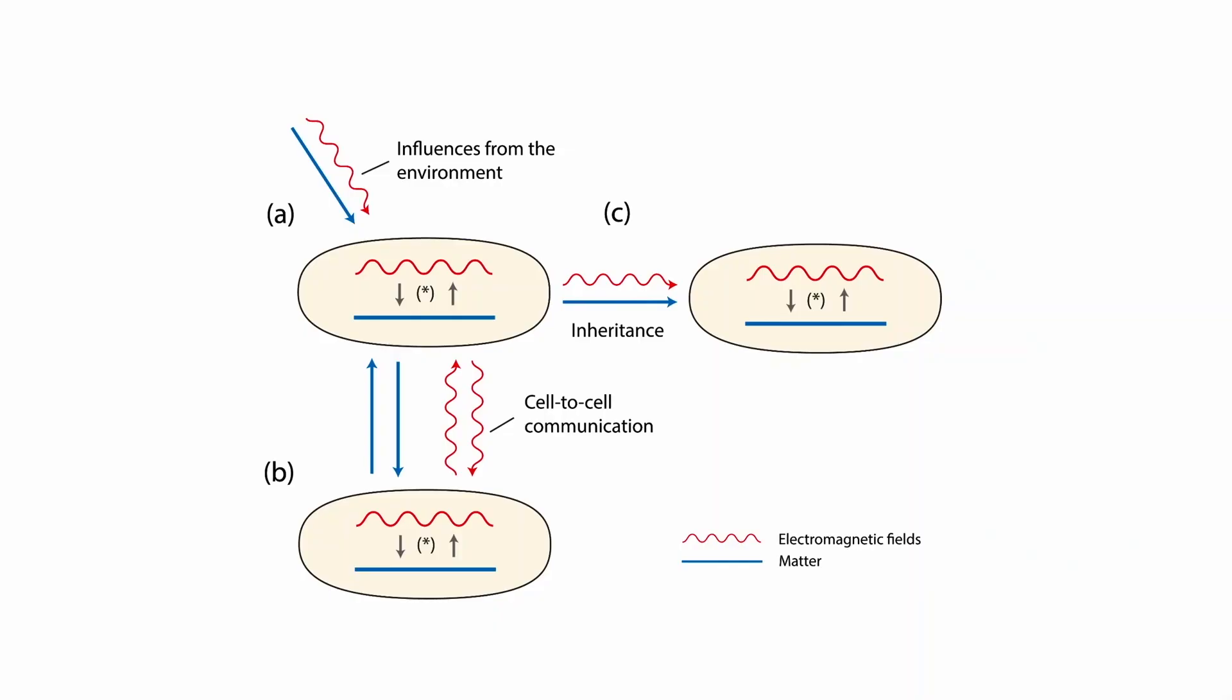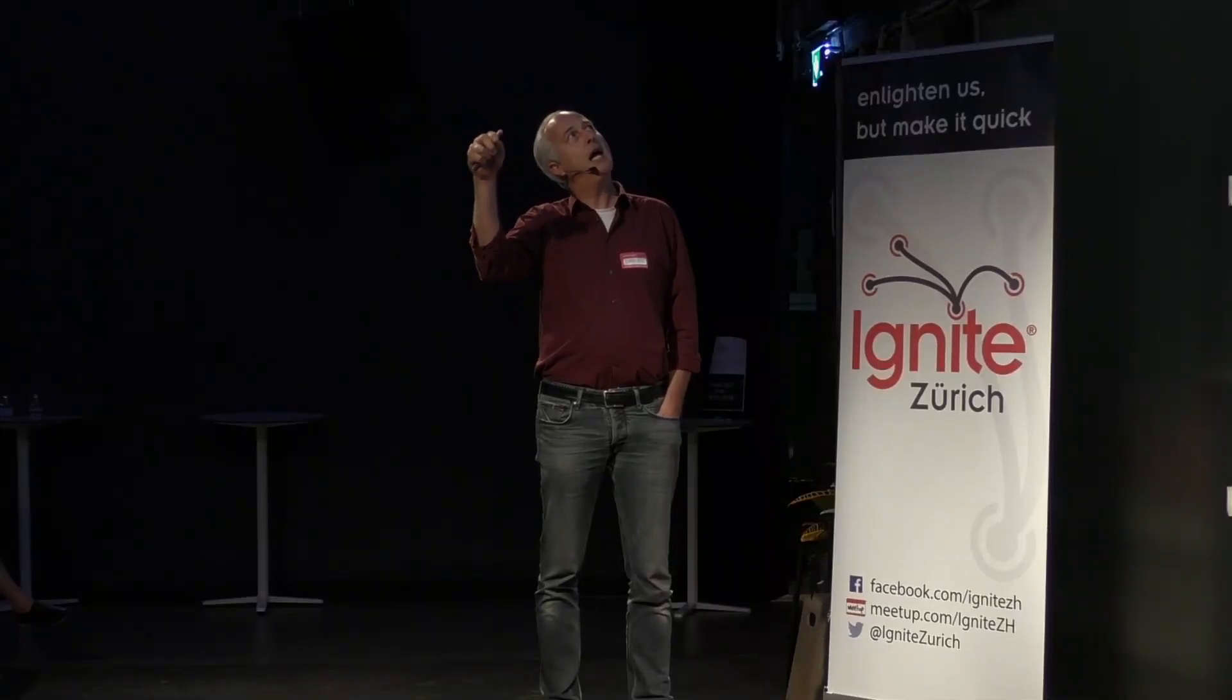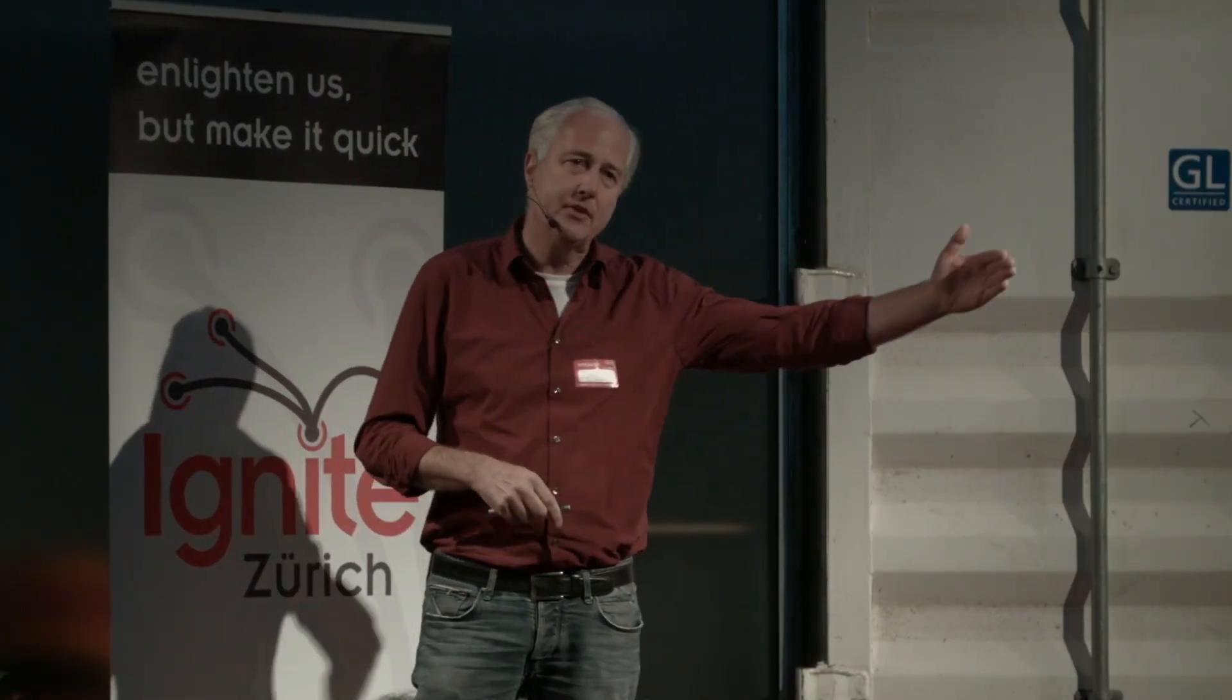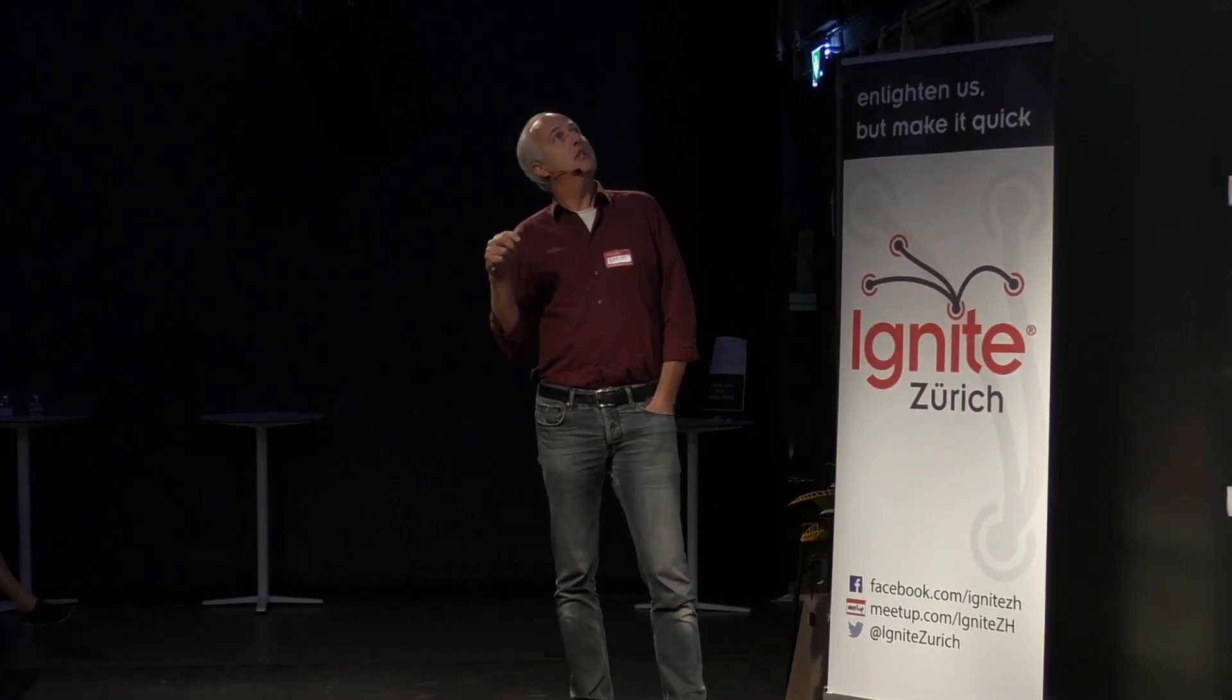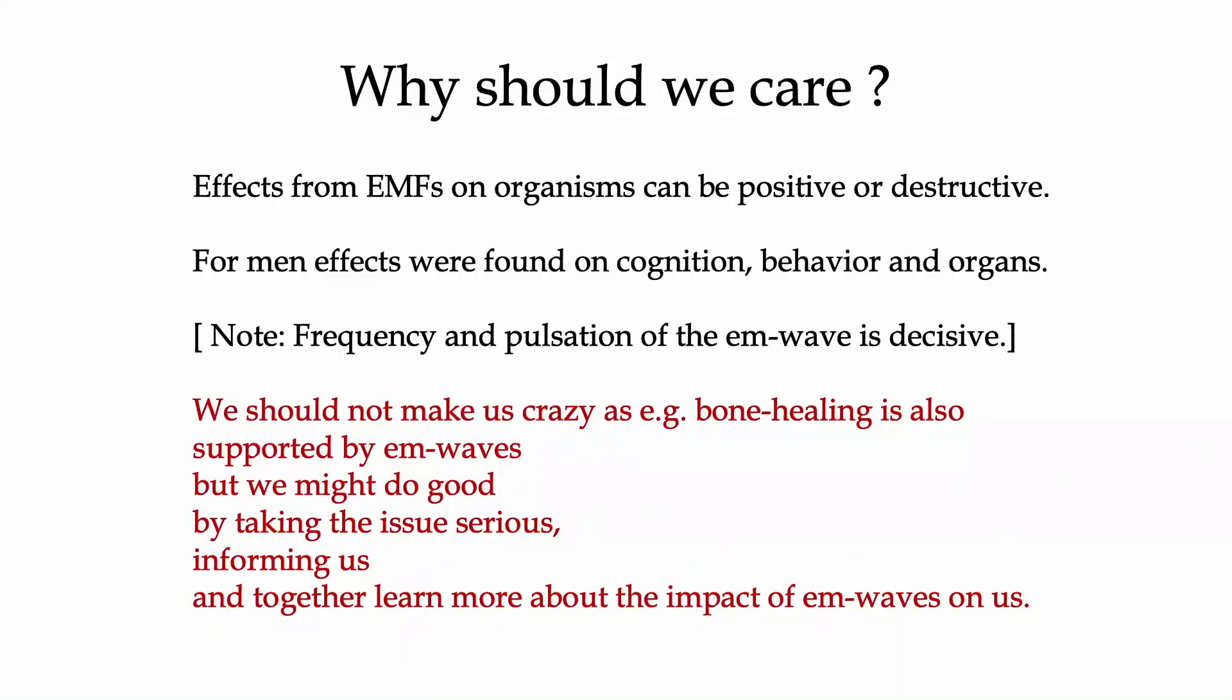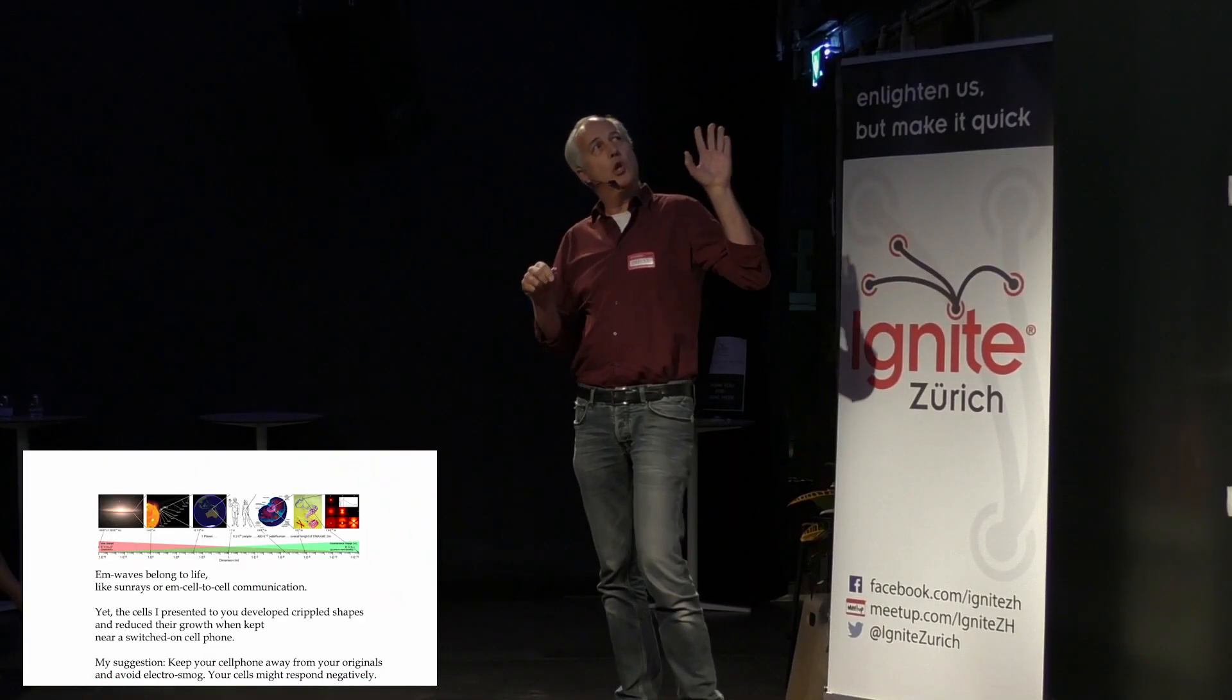In summary, cells have fields and matter, are sensitive to material and fields, talk chemically and electromagnetically with each other, and probably inherit not only DNA, but also the fields. We should take the whole issue serious, not making us crazy, but I think we should learn more and inform ourselves.